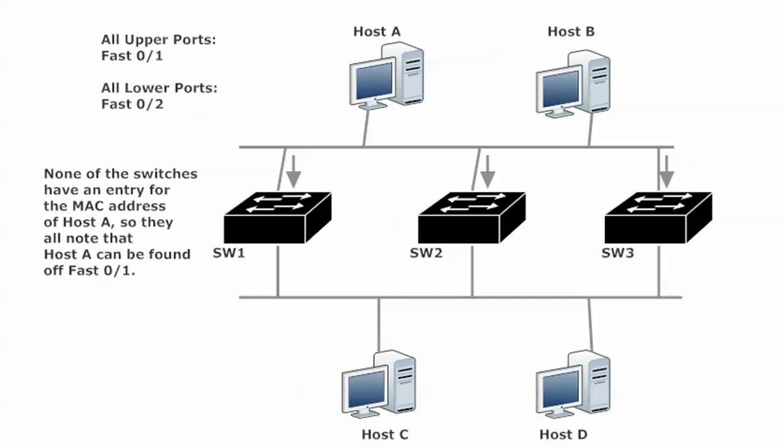Host A is sending a frame to host C. With this particular setup, the three switches are all going to get a copy of that frame. They look at the source MAC address of the incoming frame and check if they have an entry for that in their MAC address table. They'll make a note that host A is off fast Ethernet 0/1, and then, assuming they've just been turned on, they will flood the frame destined for host C because they do not have an entry for that host.